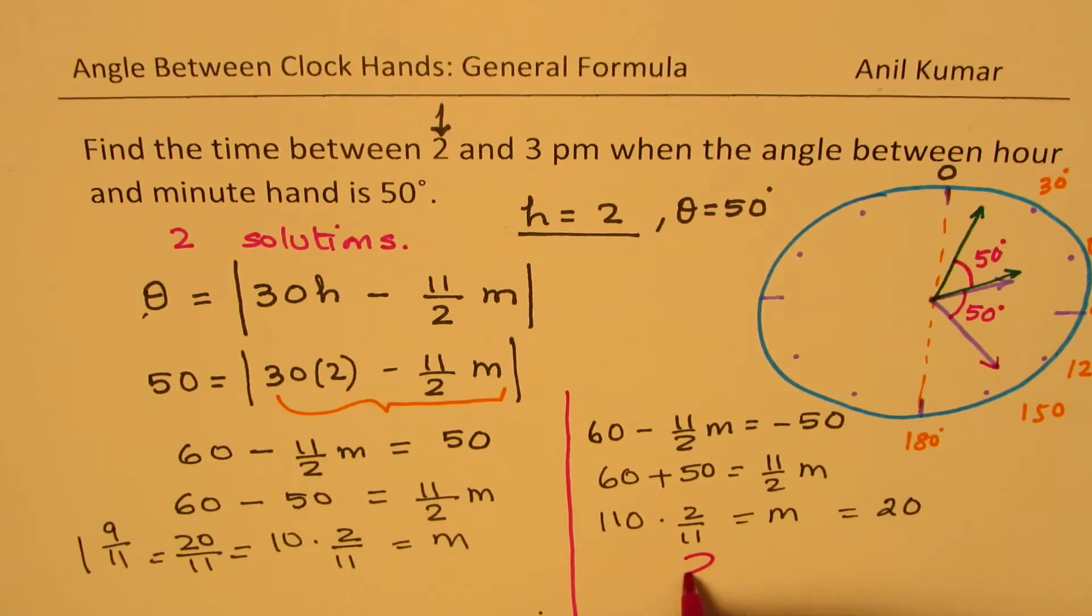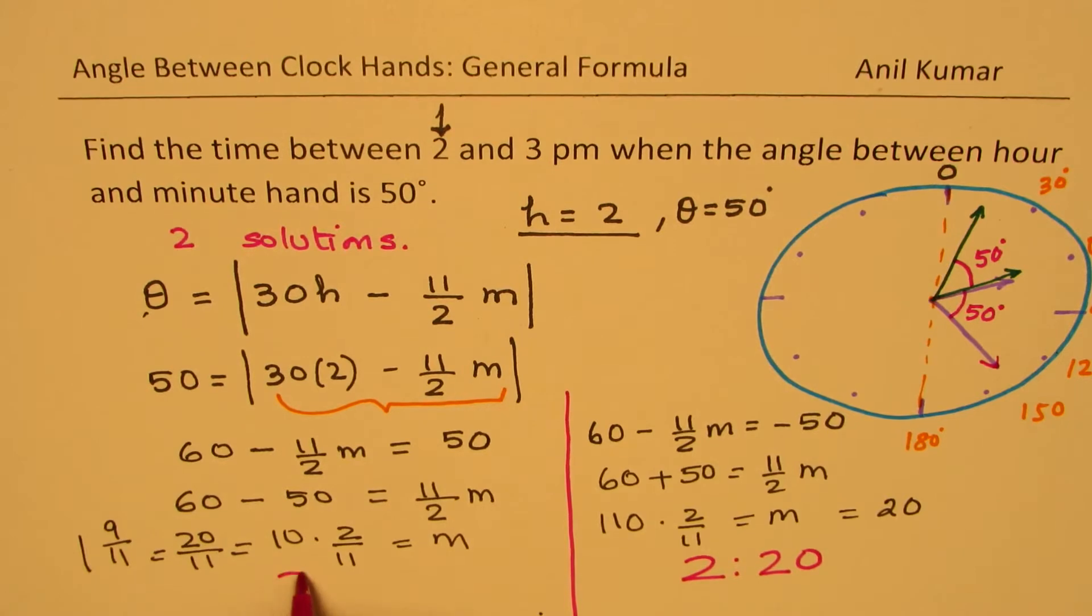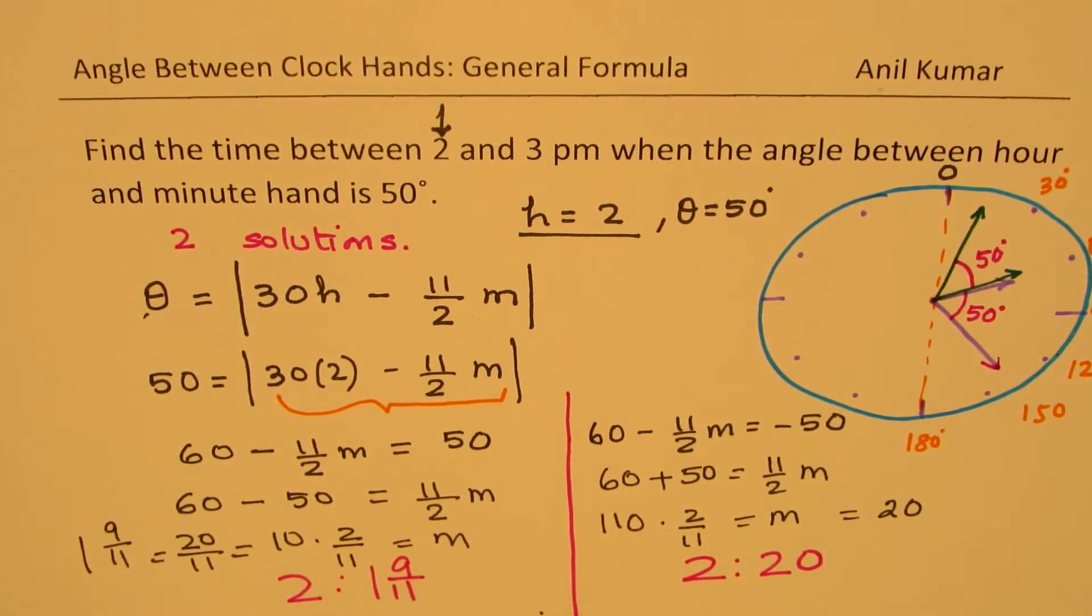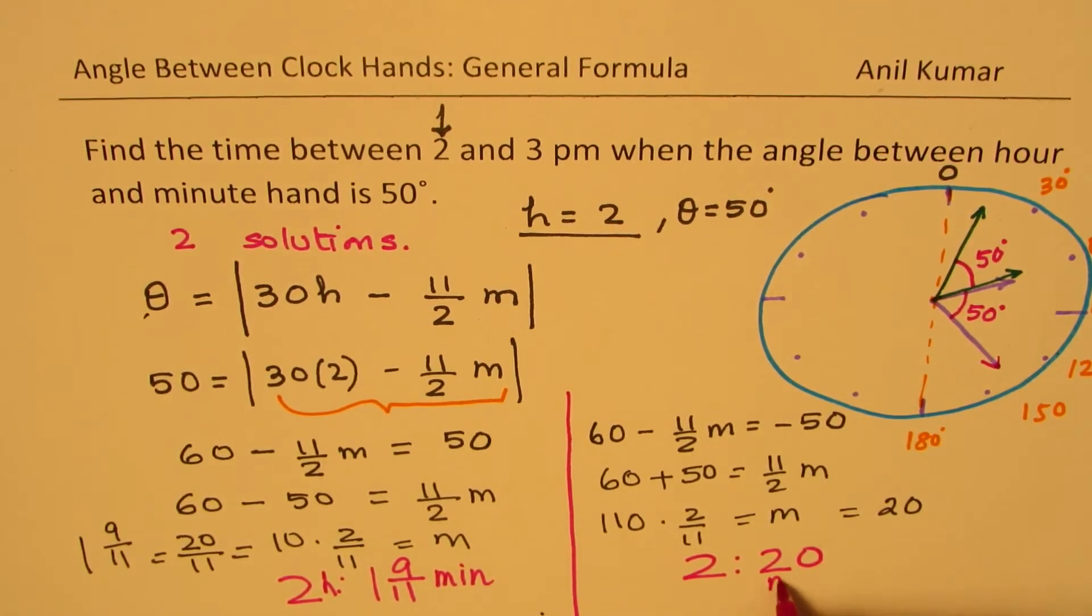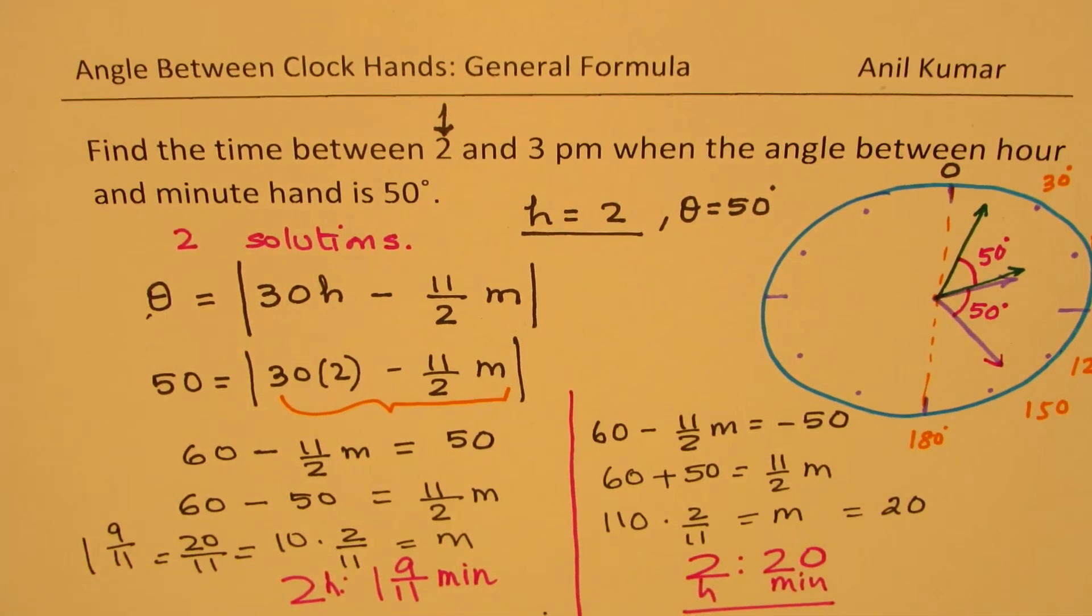One at a time could be 2:20, right? The other will be 2:1 and 9 by 11 minutes. So slightly, very close to 2 minutes, right? So basically, I should write 2 hours and so many minutes. 2 hours and 20 minutes in this case, correct?